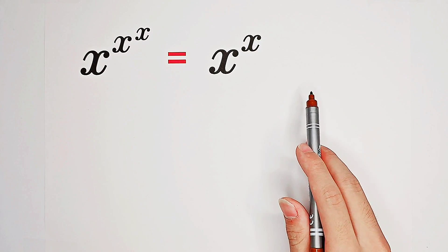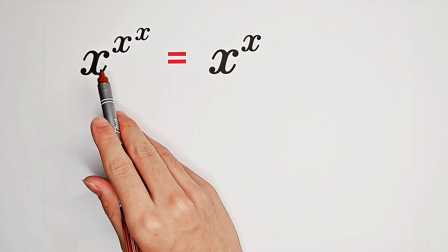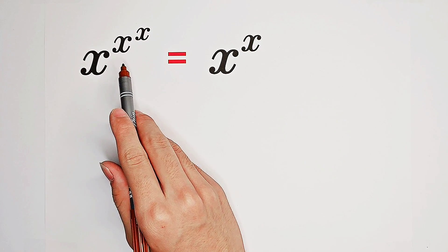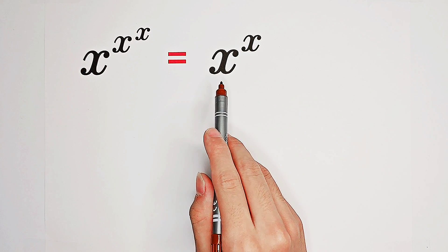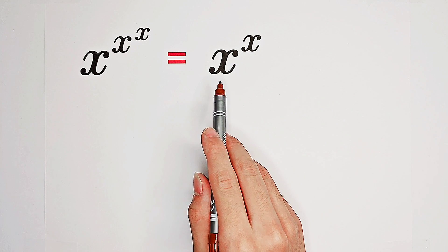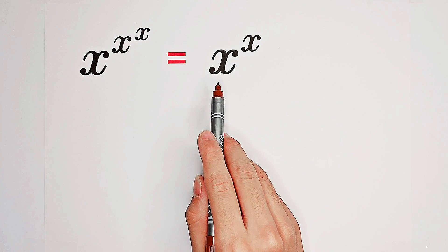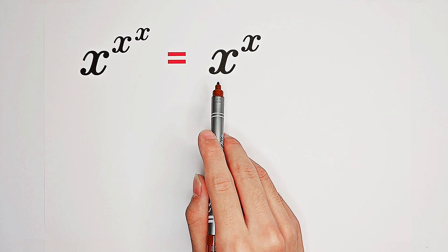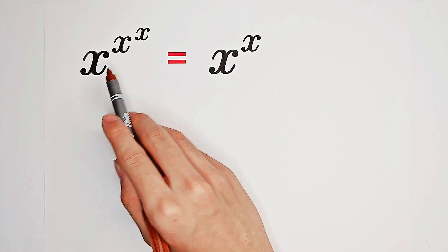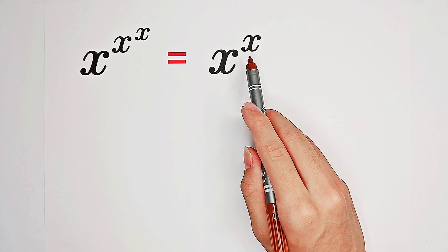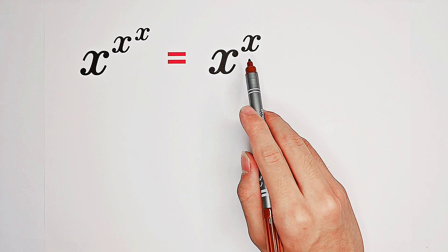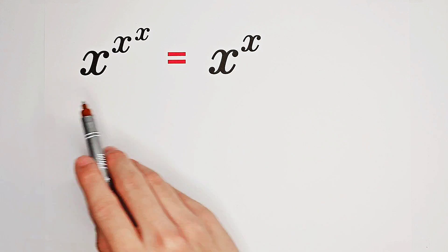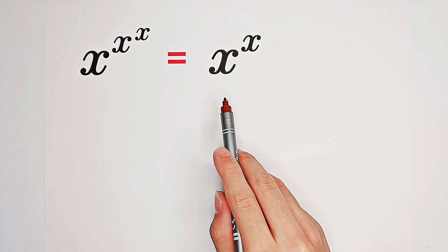Solve for x such that x to the power of x to the power of x equals x to the power of x. What shall we do firstly? We look at the exponential forms, so we can take a natural log on both sides.